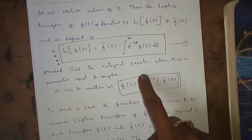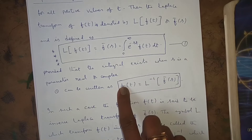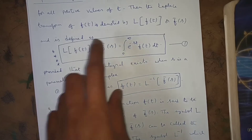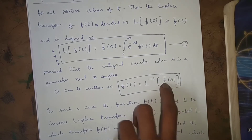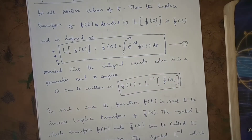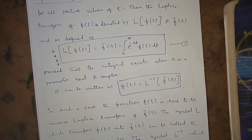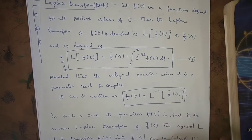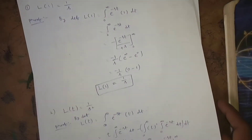The symbol L⁻¹ transforms f̄(s) back into f(t), and is called the inverse Laplace transform operator. Capital L is called the Laplace transform operator. This formula is very important — remember it by heart. Using this formula, we will now derive a few things.